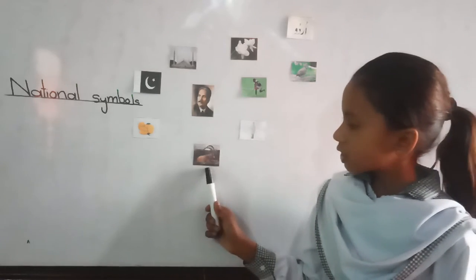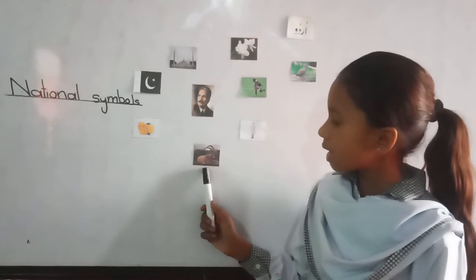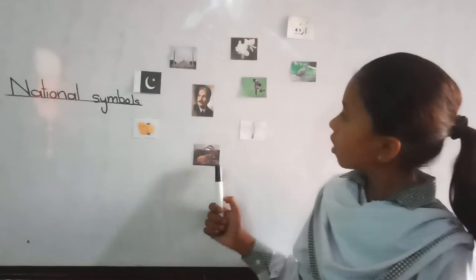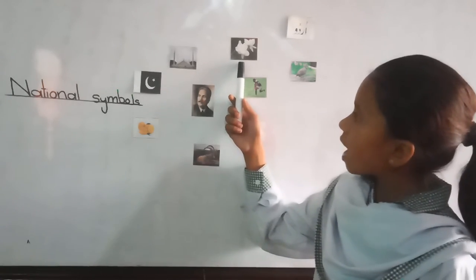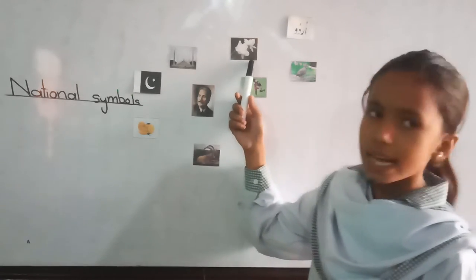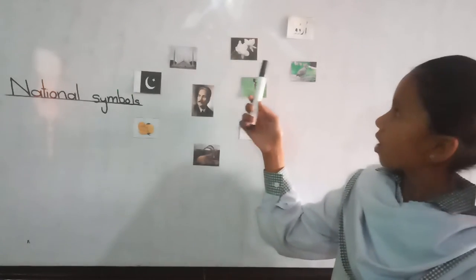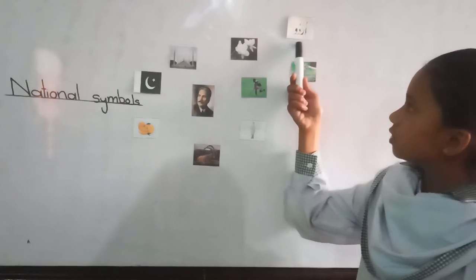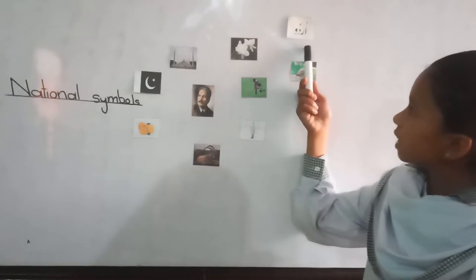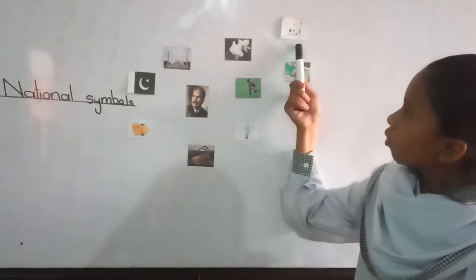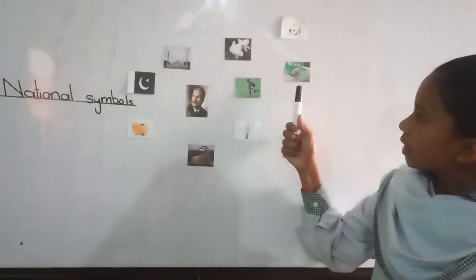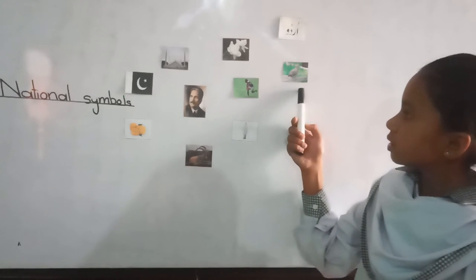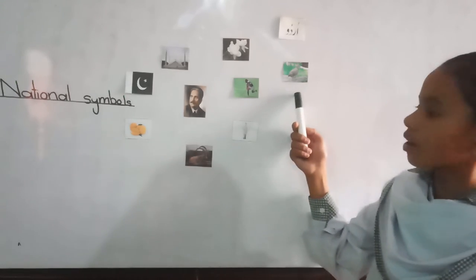National animal is Markhor. National flower is Jasmine. National language is Urdu. National bird is Chakor.